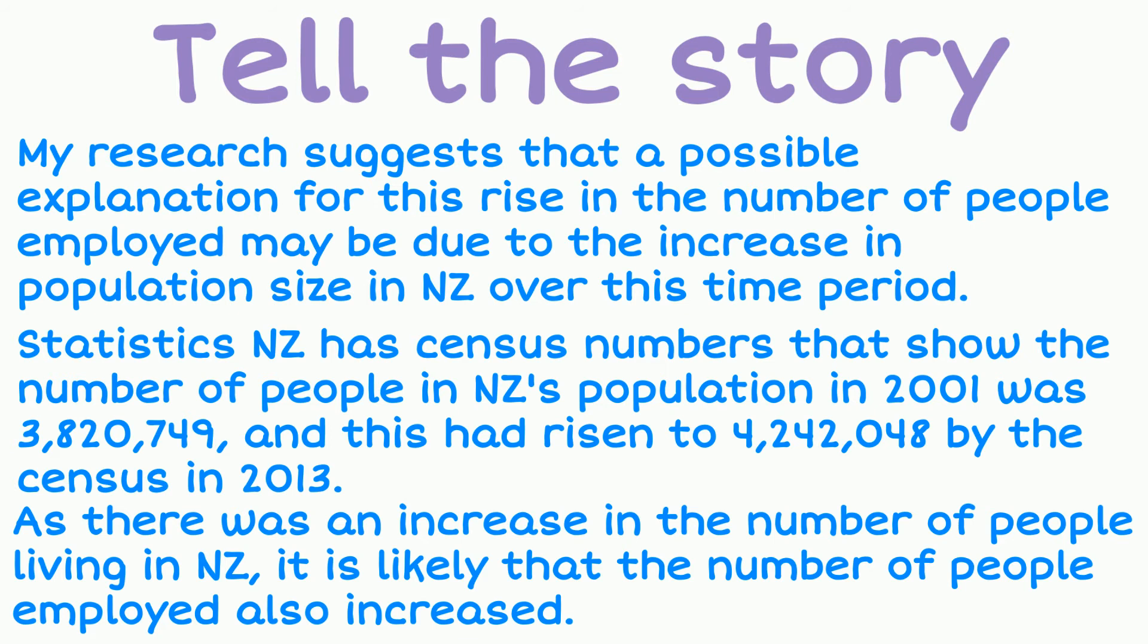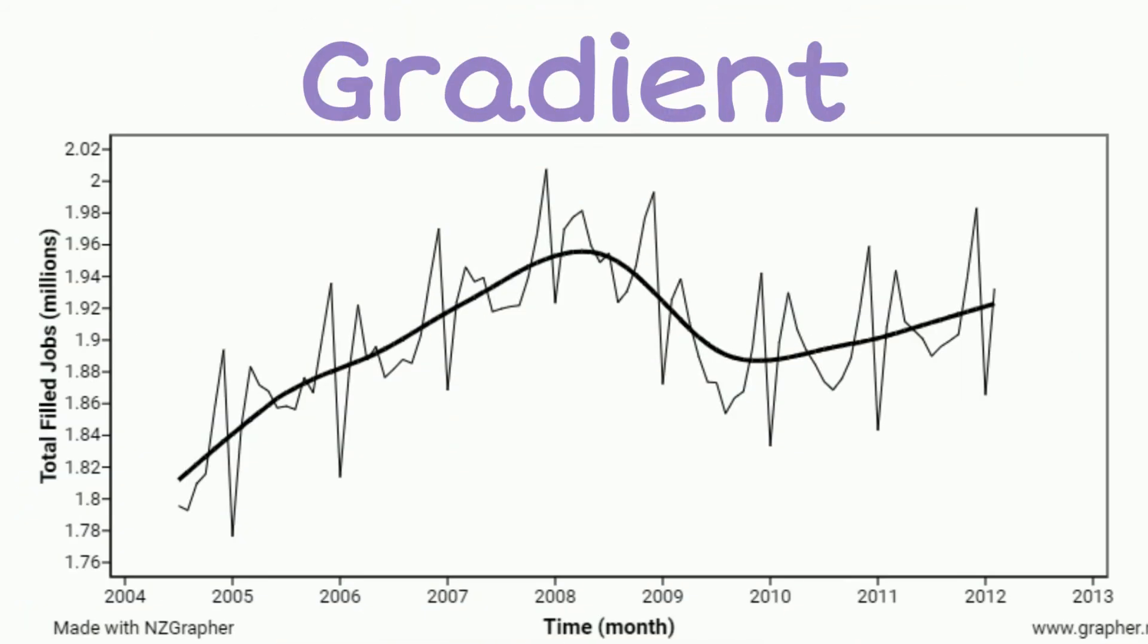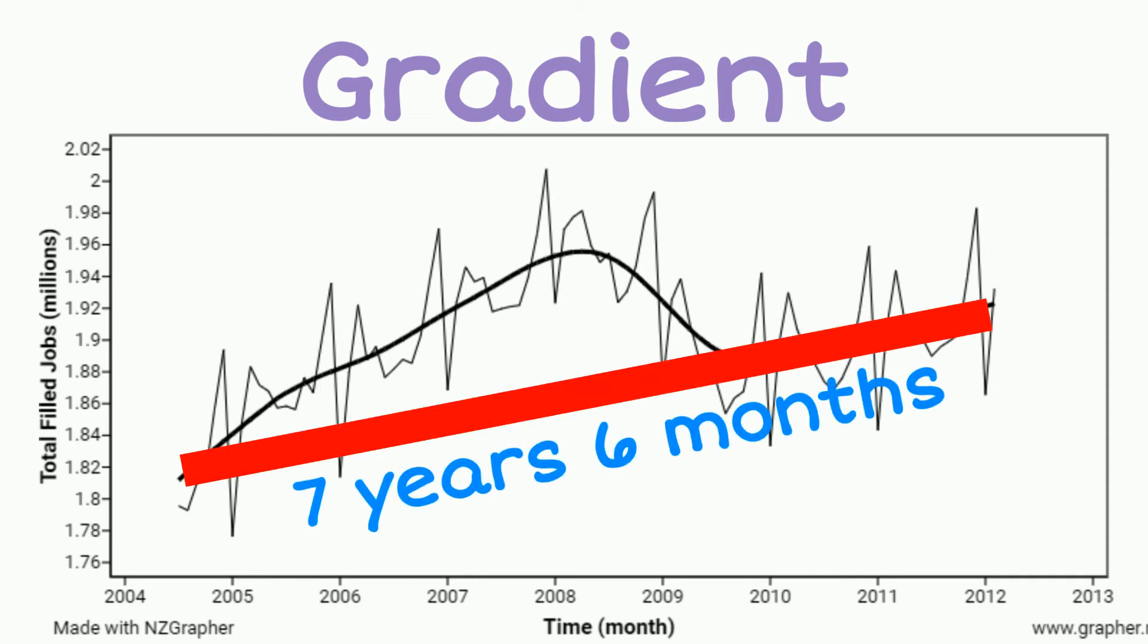Now let's go and have a look at the gradient. So looking at this graph, we can see the data spread out over seven years and six months. So turning this into a common unit, this is a total of 91 months.